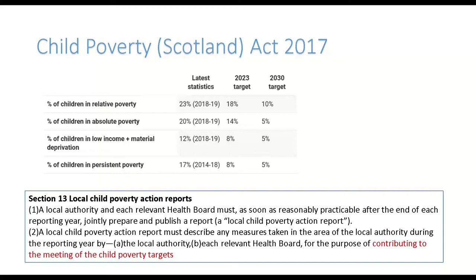There is not currently data available at local level to establish local progress against the majority of these measures. And the duty on local authorities and health boards under the Child Poverty Act isn't necessarily to meet those targets in their local area — some areas might already have surpassed the interim targets, some may have further to go. The legislative duty is rather to report on what is being done at local level and what local partners plan to do to contribute to meeting those targets at national rather than local level.